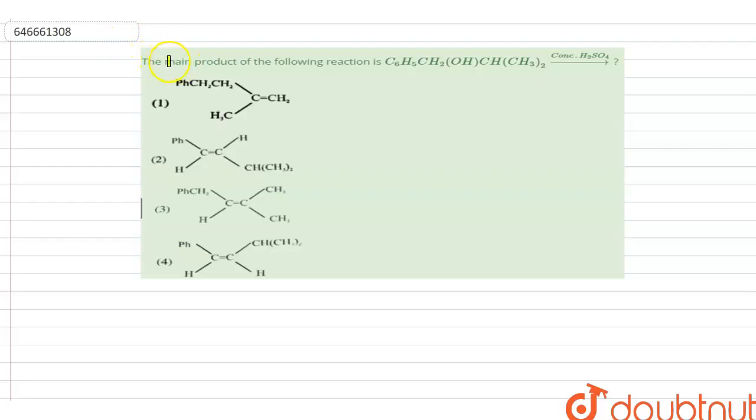The question asks for the main product of the following reaction when this molecule reacts with concentrated H2SO4. The product shown should be C6H5-CH, because we cannot have five bonds with CH2. So there's a mistake in the given formula.